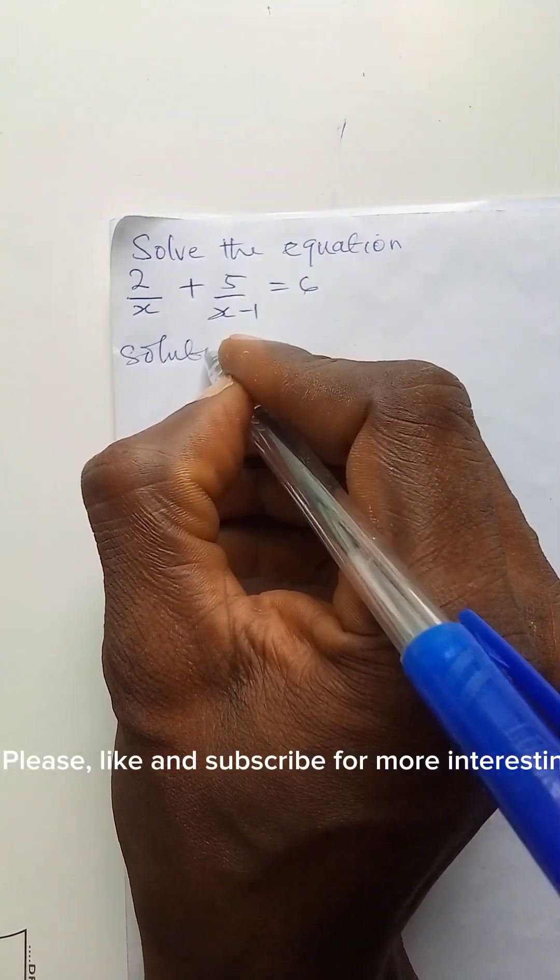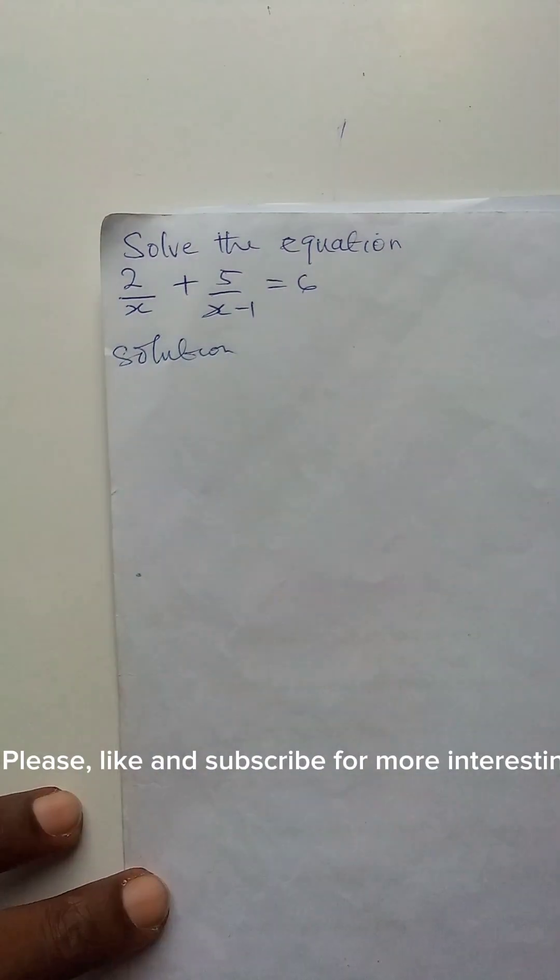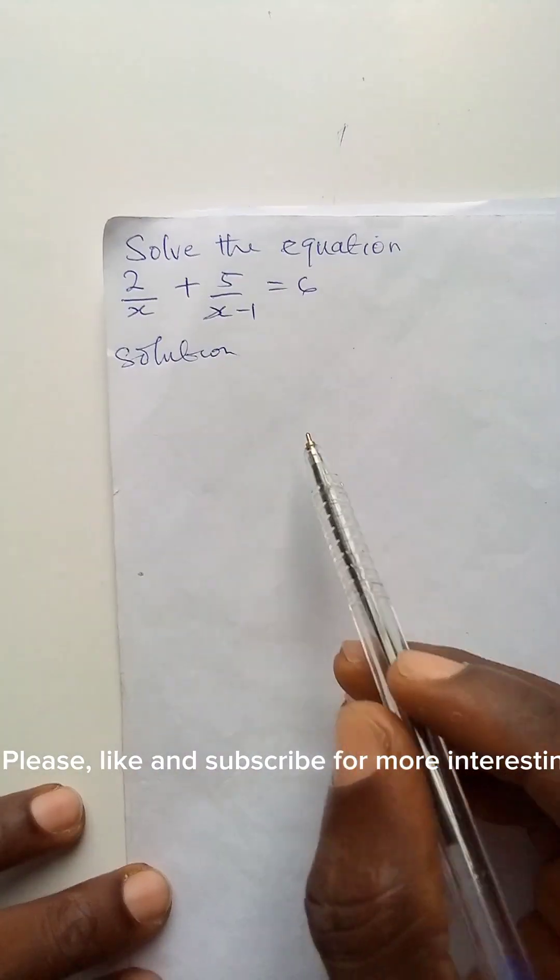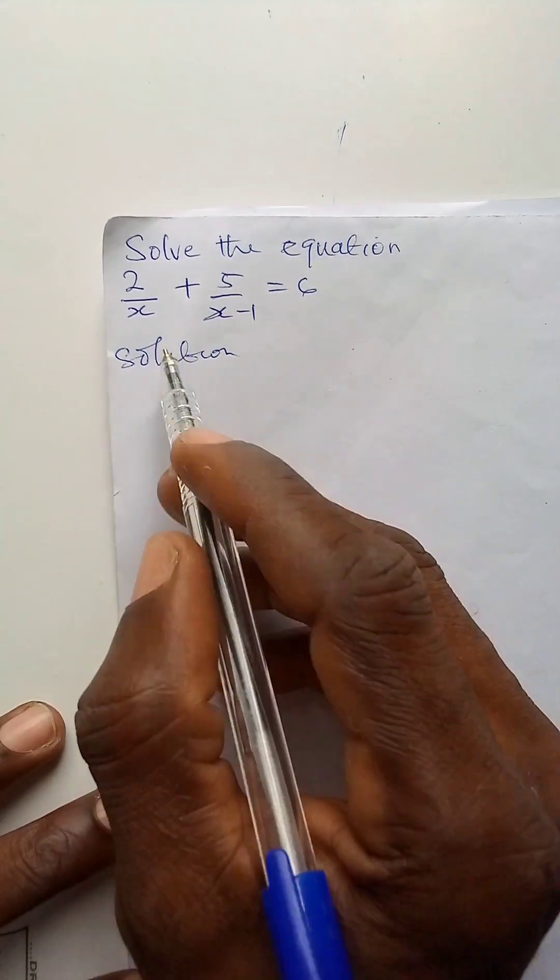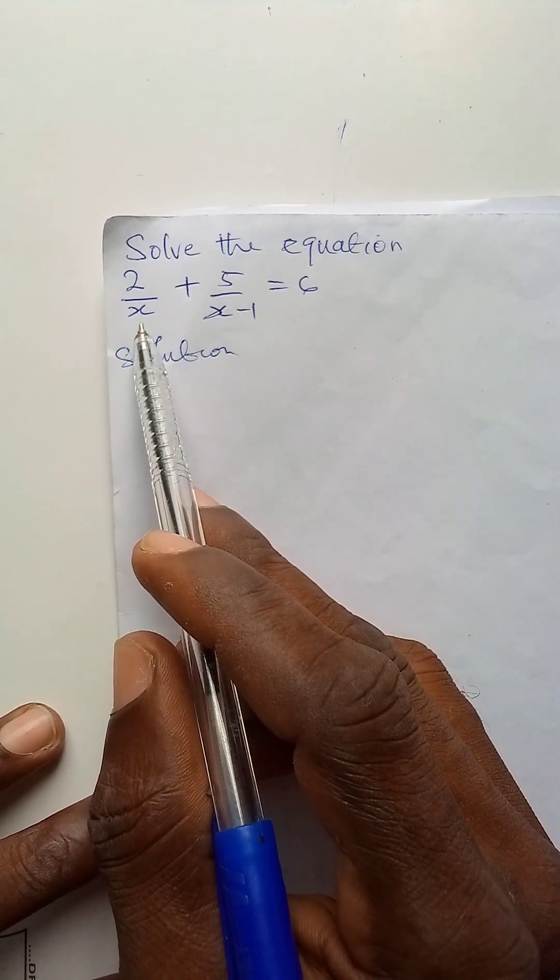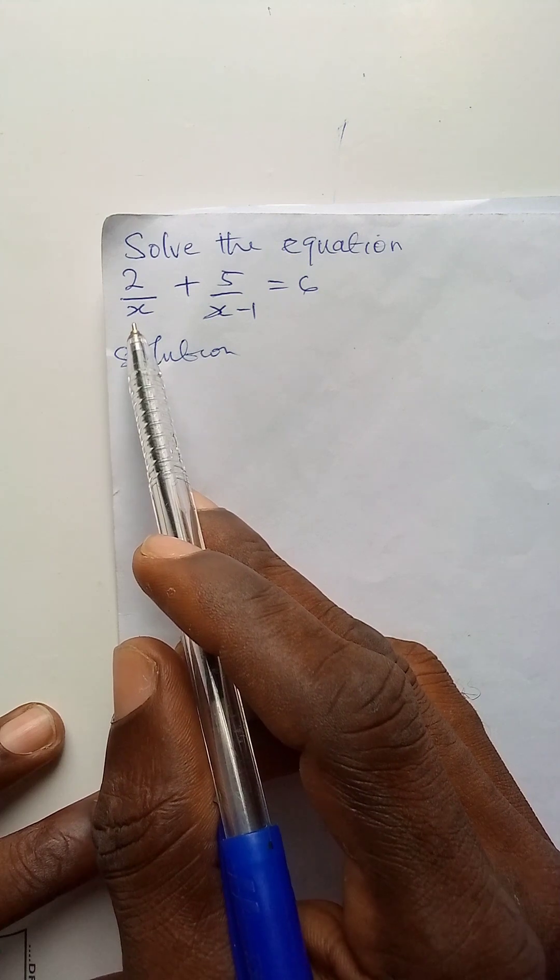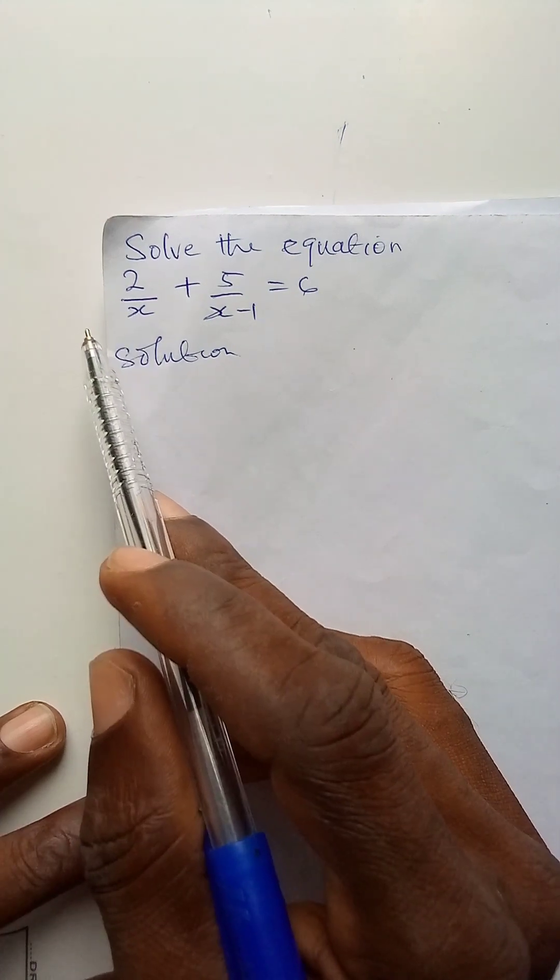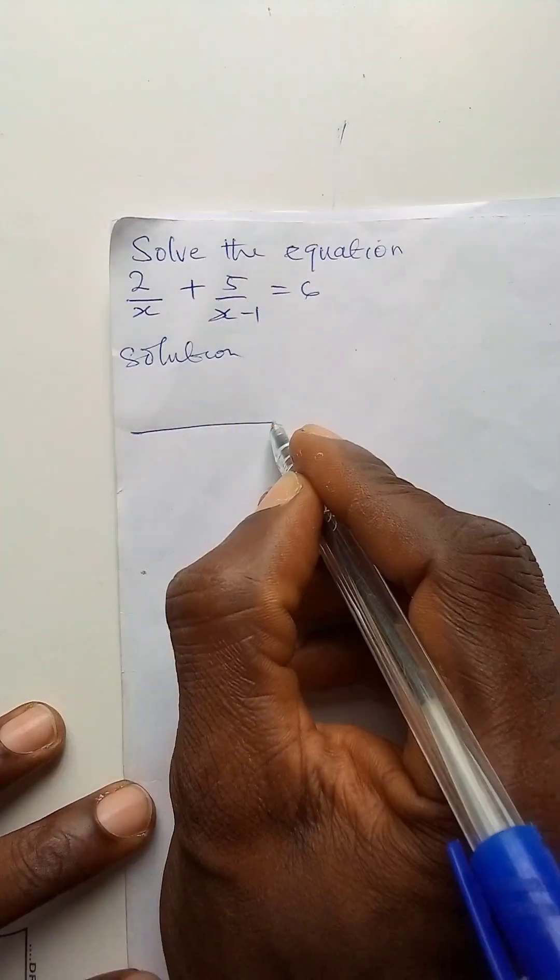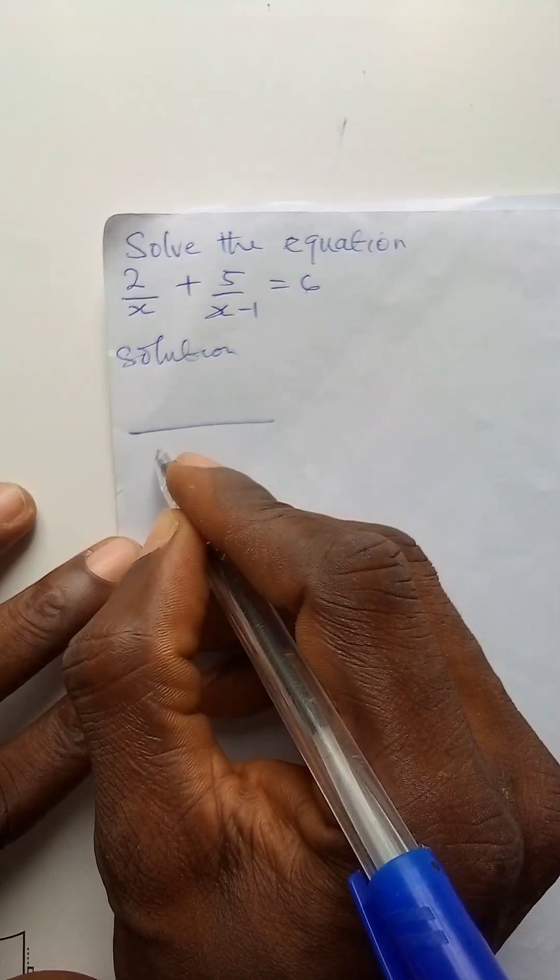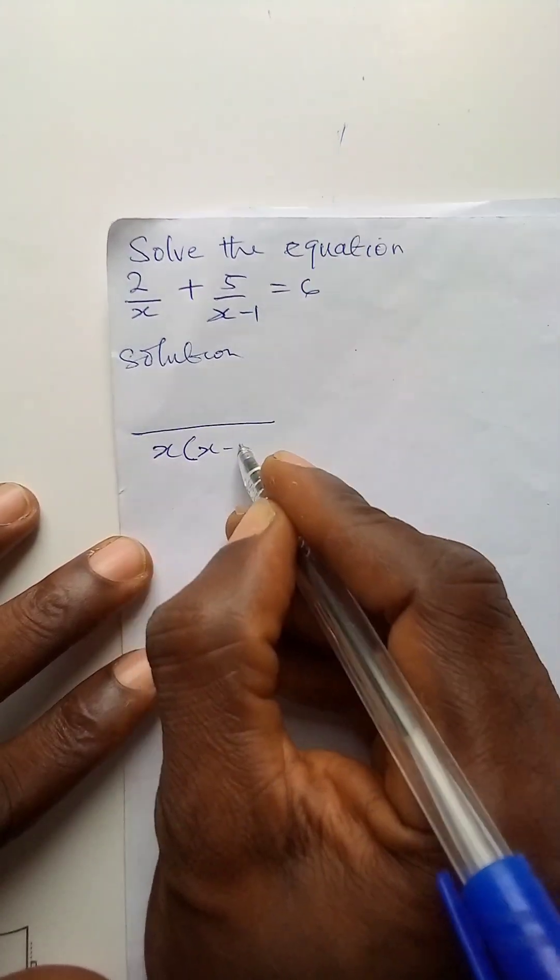To proceed, we will first simplify the fractions or clear fraction. To do that, I have to find the LCM of the denominators of the fraction in the left hand side of the equation, which is x and x minus 1. The LCM of x and x minus 1 is x times x minus 1.